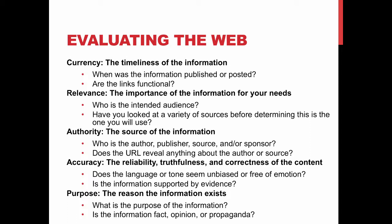With Currency, you want to know when something was published and make sure links are functional — if they're not, it shows nobody's keeping up with the page and information can be outdated. For Relevance, always make sure the source helps you answer your research question, think about who the intended audience is, and consider whether you've looked at multiple sources. For Authority, you want to know who wrote the information and pay attention to the URL to see what it tells you about the author or source — this is where knowing about domain names comes in handy.